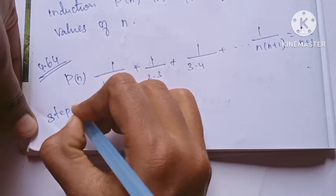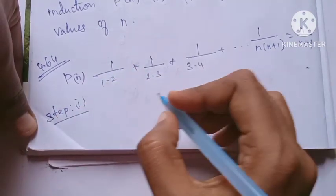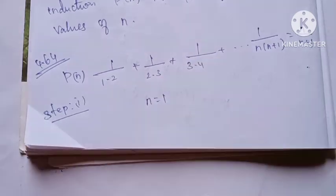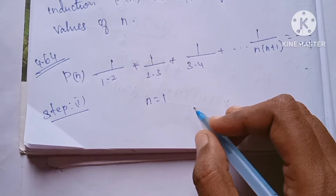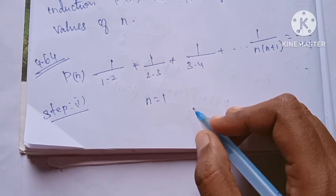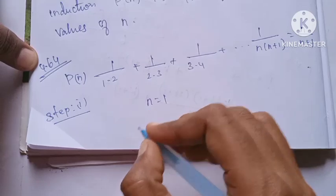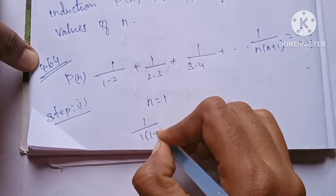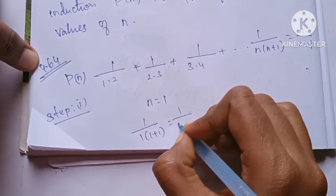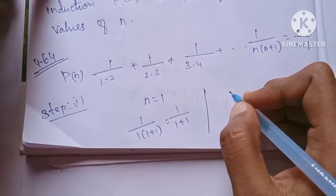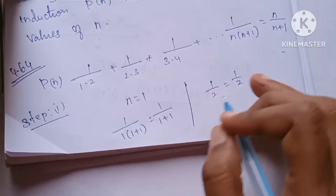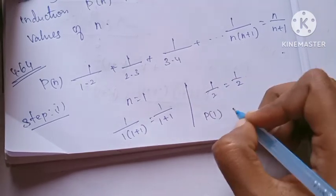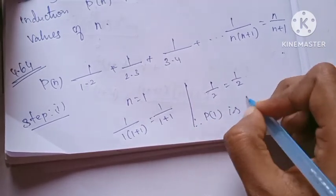Step 1: n is equal to 1. We substitute n equals 1 into LHS and RHS. LHS: 1 by 1 into 1 plus 1 is equal to 1 by 2. RHS: 1 by 1 plus 1 is equal to 1 by 2. LHS and RHS are equal. Therefore P(1) is true.